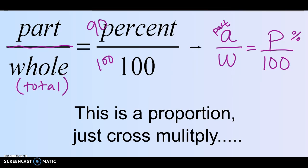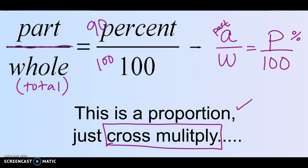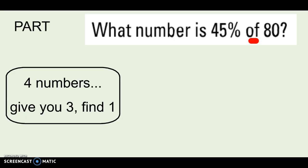So it's a proportion, which means everything we learned in Chapter 5 — like cross-multiplication — will work here as I'm solving them in Chapter 6. For any proportion, I need four numbers: a ratio or fraction equal to another ratio or fraction. They are supposed to give me three numbers, and there's one that I'm going to solve for. Every time I have a problem, I'm going to think: what are the three numbers they're giving me, where do they go, and what's the one I'm looking for?